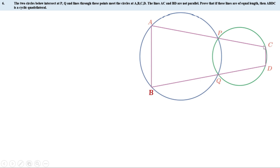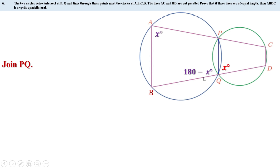First, let us join P and Q. Let angle A equal x°. Then ABQP is a cyclic quadrilateral, so the opposite angles are supplementary, giving angle BQP equal to 180° − x°. These two angles are in a linear pair whose sum is 180°, so angle PQD equals x°. Now quadrilateral PQDC is also cyclic, so opposite angles are supplementary: since angle PQD is x°, angle C equals 180° − x°.